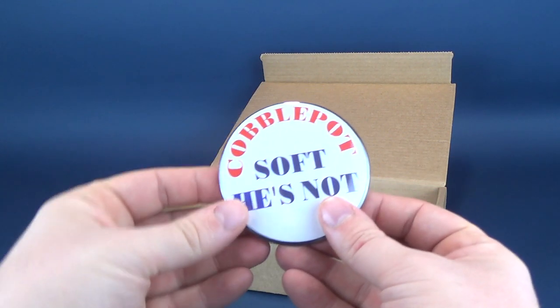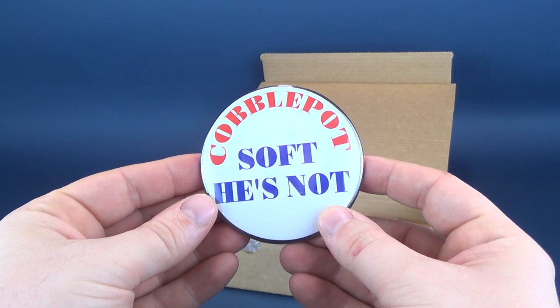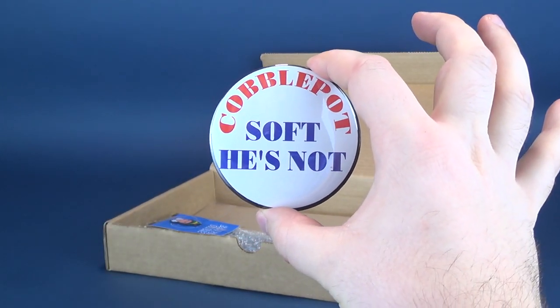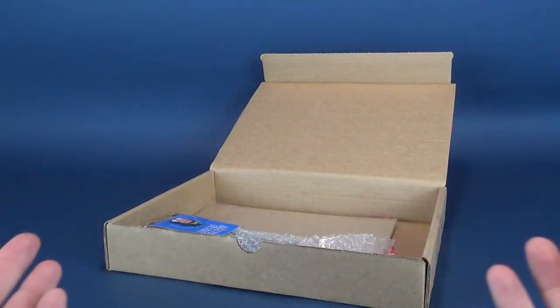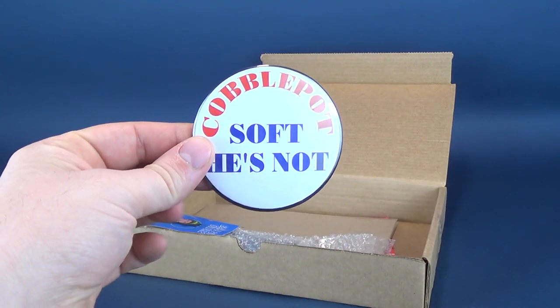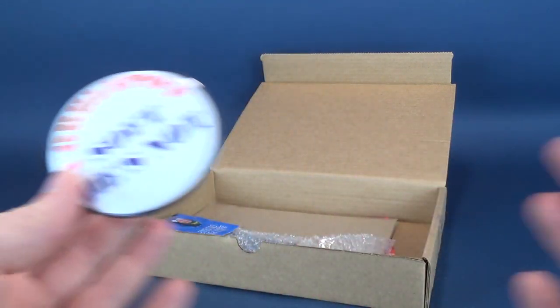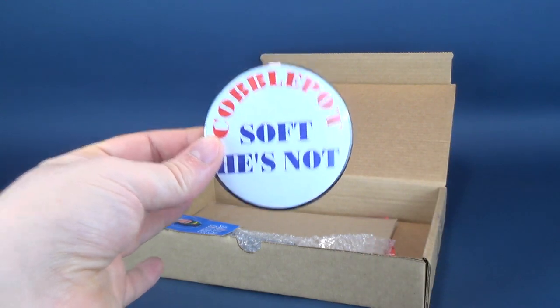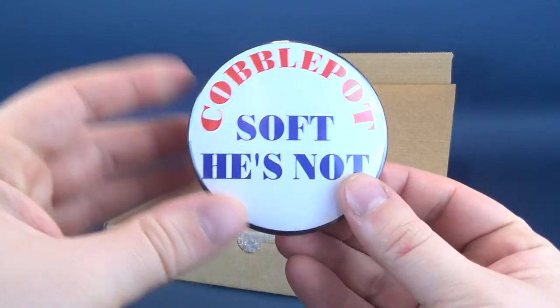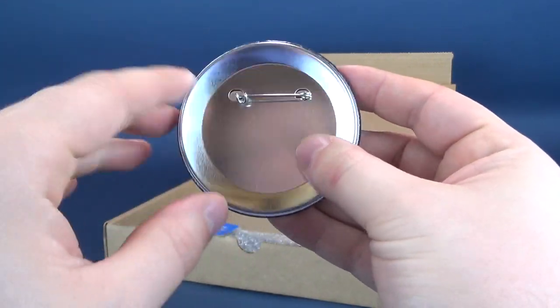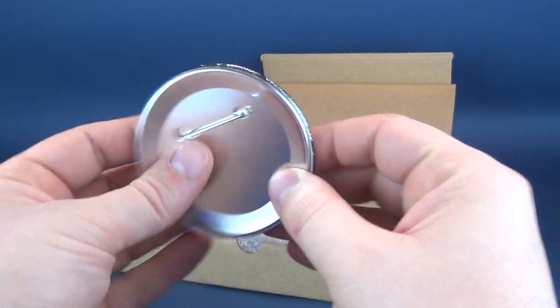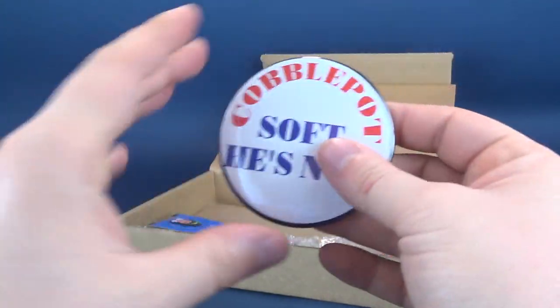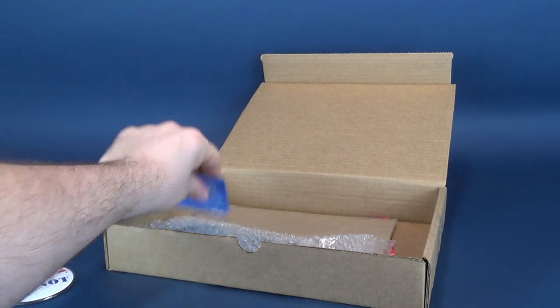First thing we are getting is the Cobblepot Soft He's Not. I believe this is a nod to Batman Returns where Oswald Cobblepot was running for mayor, which does fall into the Christmas season. I guess you could consider Batman Returns to be a Christmas movie. It's just as much Christmas as the likes of Die Hard, which a lot of people have now admittingly accepted as a Christmas staple, even though Bruce Willis has not. It says Cobblepot Soft He's Not, just a very basic simplistic button system on the back. You can see how that would pin onto your denim jacket.